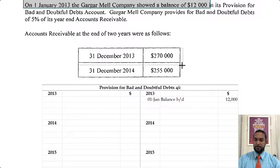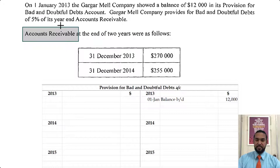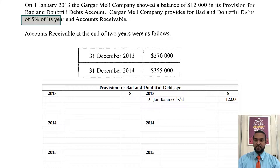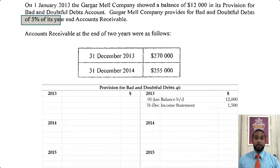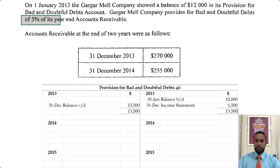At the end of 31st December 2013, we have a $270,000 receivables balance and we have to find 5% of that and make that the provision figure. So 5% of that will be $13,500, which means that we have to increase this from $12,000 to $13,500, which is an increase of $1,500. To record an increase in the provision, we have to credit the provision account. That's going to give us a total balance carried on of $13,500, and that's going to be brought down on the credit side on 1 Jan 2014.